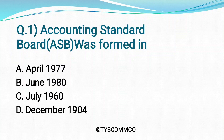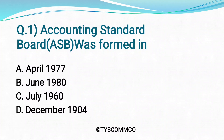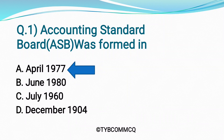Question Number 1: Accounting Standard Board was formed in which year? Option A: April 1977, Option B: June 1980, Option C: July 1960, Option D: December 1904. Yes, you are right — Option A, April 1977, is the correct answer. This is a very important MCQ, please mark it down.